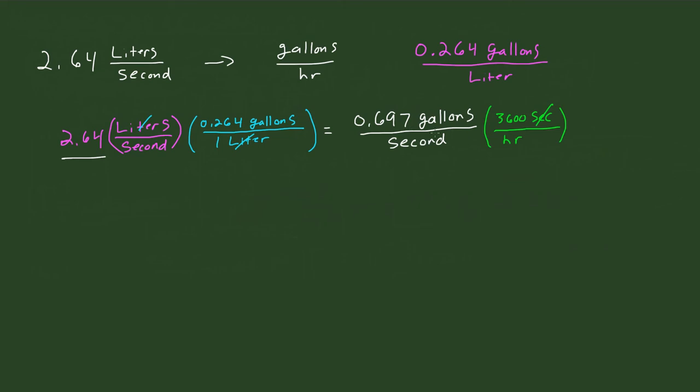So the seconds cancels out, and then therefore, since these two numbers are both in the numerator, we multiply them. So 3,600 times 0.697 ends up being, we get that there are, that this ends up being 2,509.2.